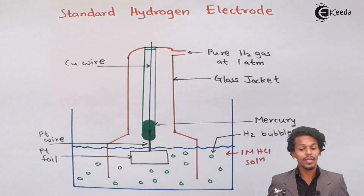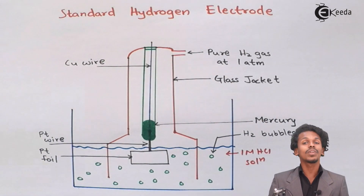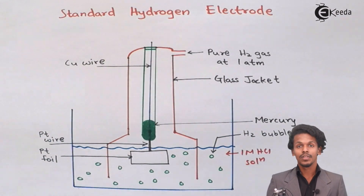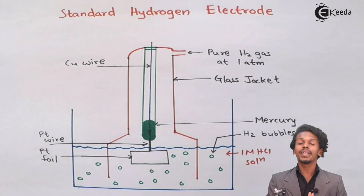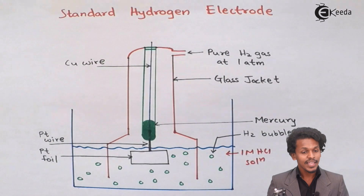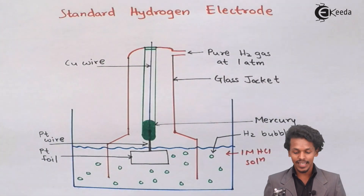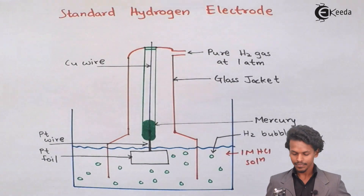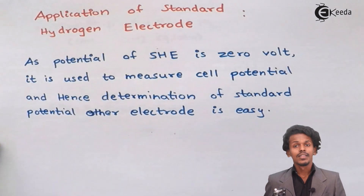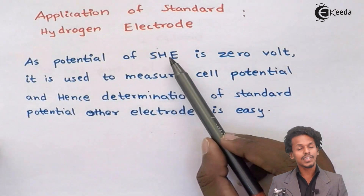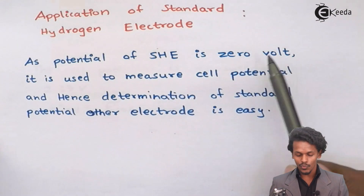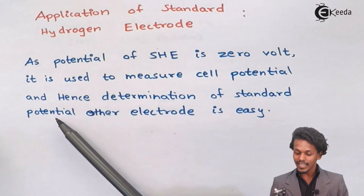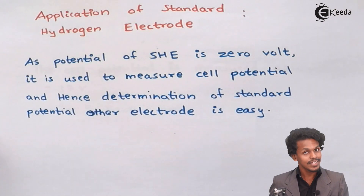By connecting this electrode with another electrode, we can easily find out the potential of that other electrode. Since the SHE has a potential of zero volt, it is used to measure cell potential, and hence the determination of the standard potential of other electrodes is also very easy.